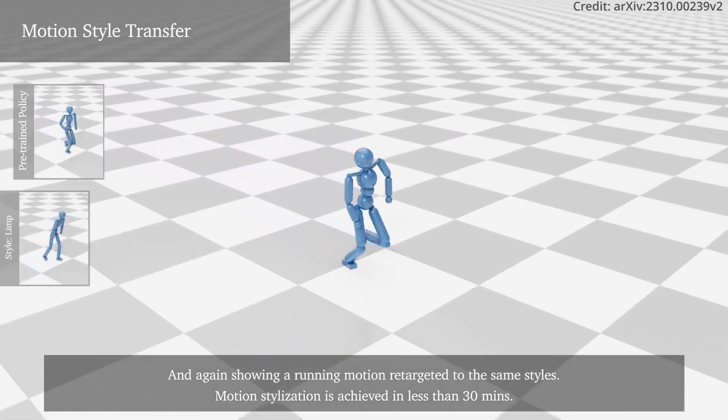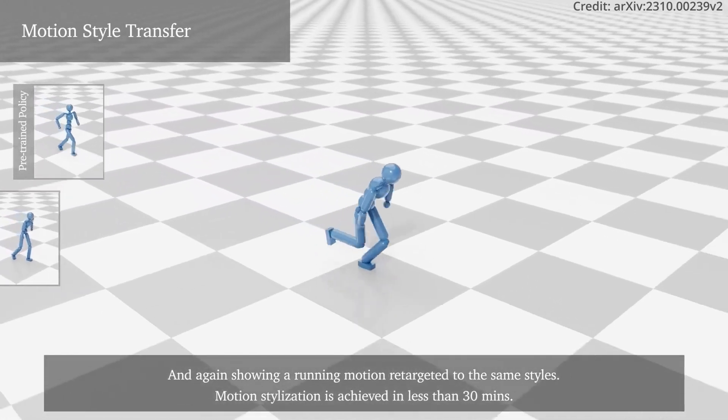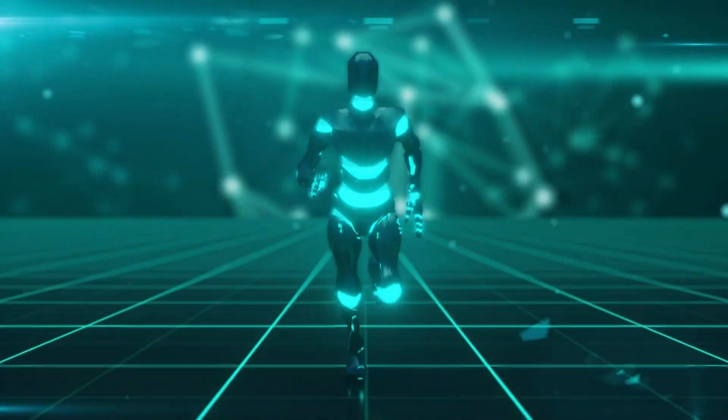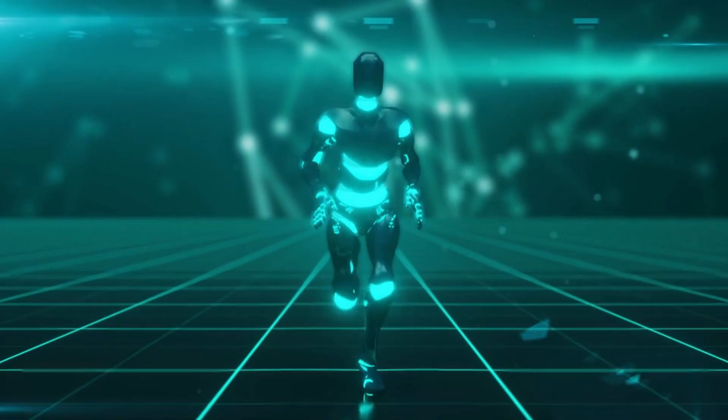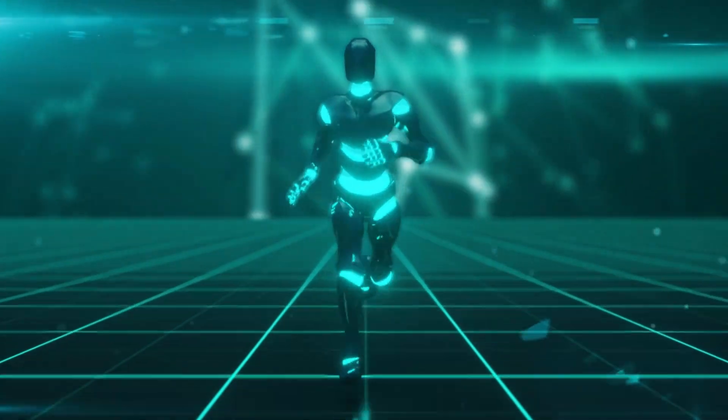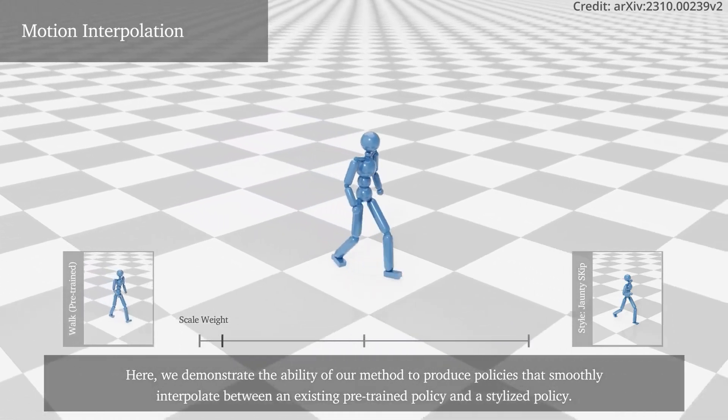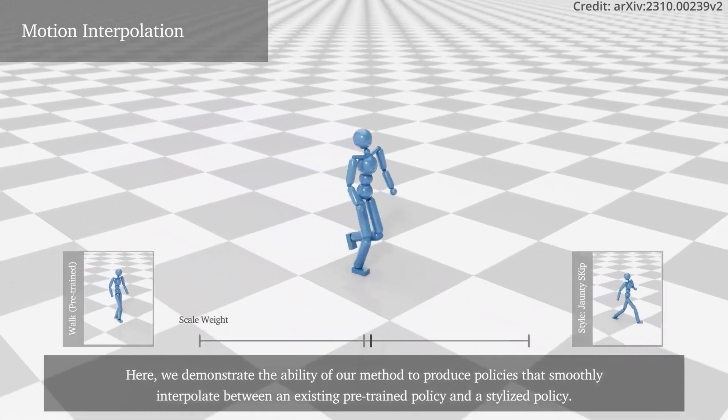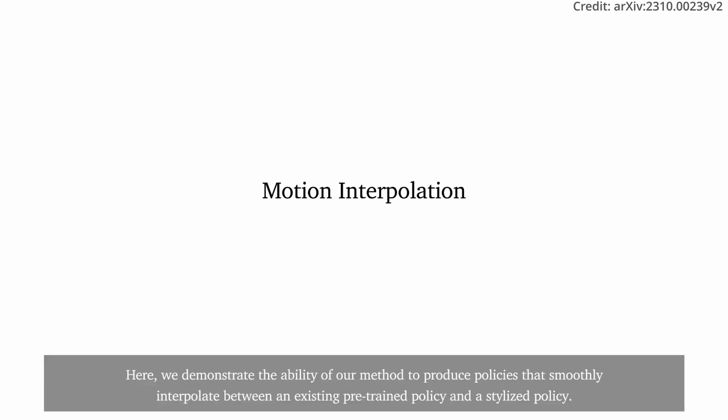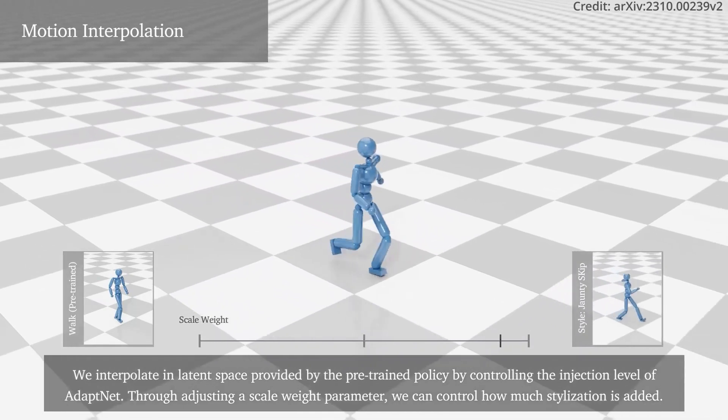This rapid adaptation and stylisation of motions open up a world of possibilities in creating diverse and realistic AI characters in virtual environments. But AdaptNet doesn't just stop at stylisation. It also demonstrates a remarkable ability to produce policies that smoothly interpolate between an existing pre-trained policy and a stylised policy.